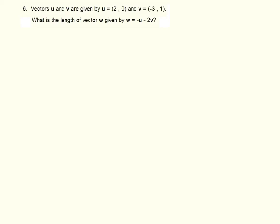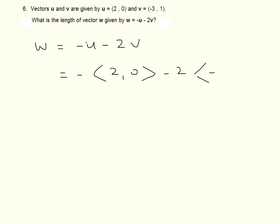Let us first find the components of vector W. Vector W equals negative U, negative 2V. Now we put the components of U and V. U is 2, 0, minus 2. V is negative 3, 1.